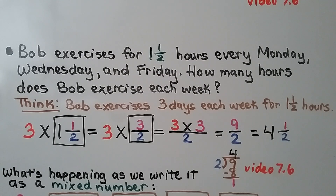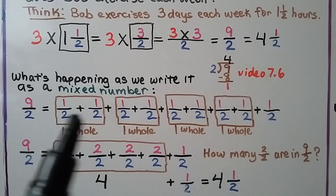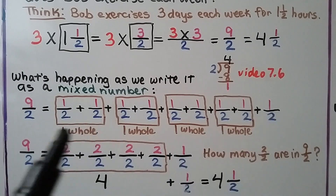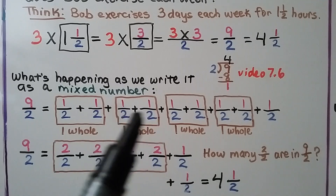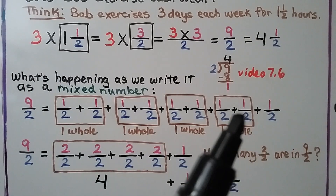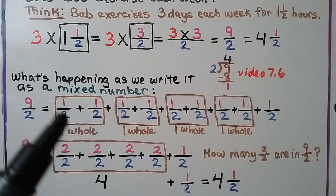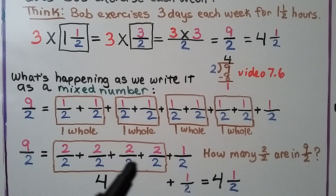We can see what's happening as we write it as a mixed number. We got the answer 9 halves, and 9 halves is a half 9 times. We put a half and a half together, we get 1 whole. We put another half and half together, we get another whole. We do this again and again — we have 1, 2, 3, 4 wholes and a half left over. That's how we got the 4 and a half. We can also look at it as there are 2 halves — same numerator and denominator — so that equals 1 whole. We're thinking how many 2 halves are in 9 halves: we have 4 and a half.